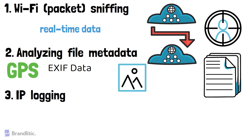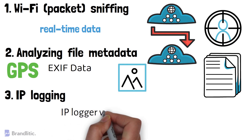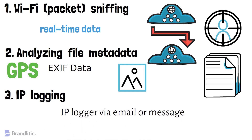3. IP logging. Hackers can slip an IP logger — an invisible piece of code — into your device through an email or a message, so that they can sniff out your IP address.